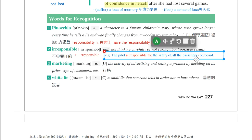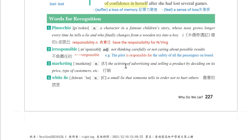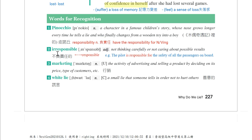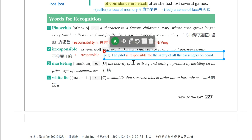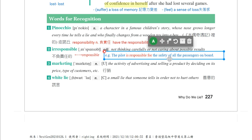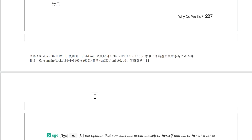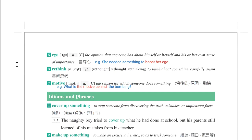例句：The pilot is responsible for the safety of all the passengers on board。机长负责所有乘客的安全，be responsible for something。名词是responsibility，have the responsibility for something。The pilot has the responsibility for the safety of all the passengers on board。